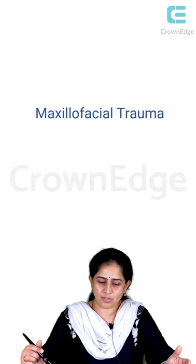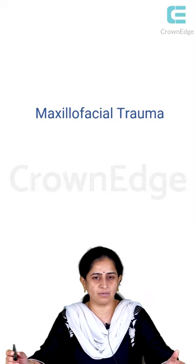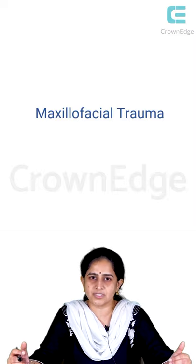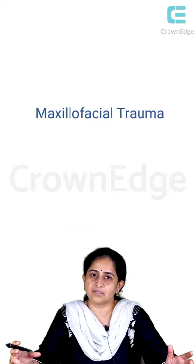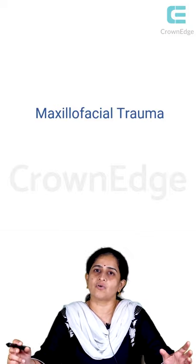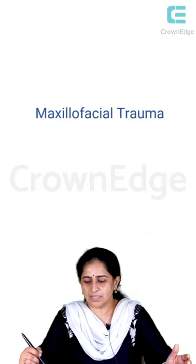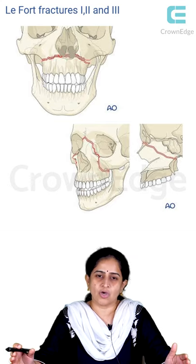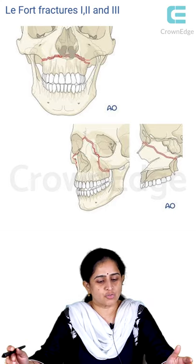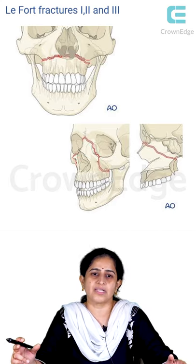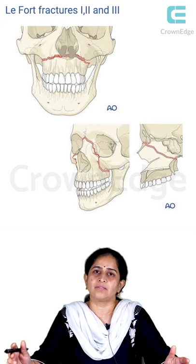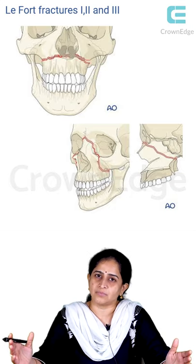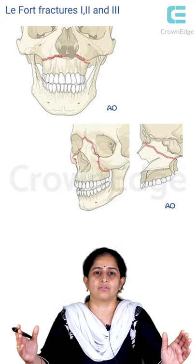The first topic we're going to start with is maxillofacial trauma. When we talk about maxillofacial trauma, we talk about the face in different thirds — the upper third, the middle third fractures, and the lower third fractures. Let us first talk about the middle third fractures. In the middle third fractures, we have the maxilla, the zygoma, the nasal bones, all the way up to the maxillary alveolus. The most common fractures we discuss in the middle third would be the Le Fort fractures, divided into Le Fort 1, Le Fort 2, and Le Fort 3, depending on the orientation of the fracture lines.